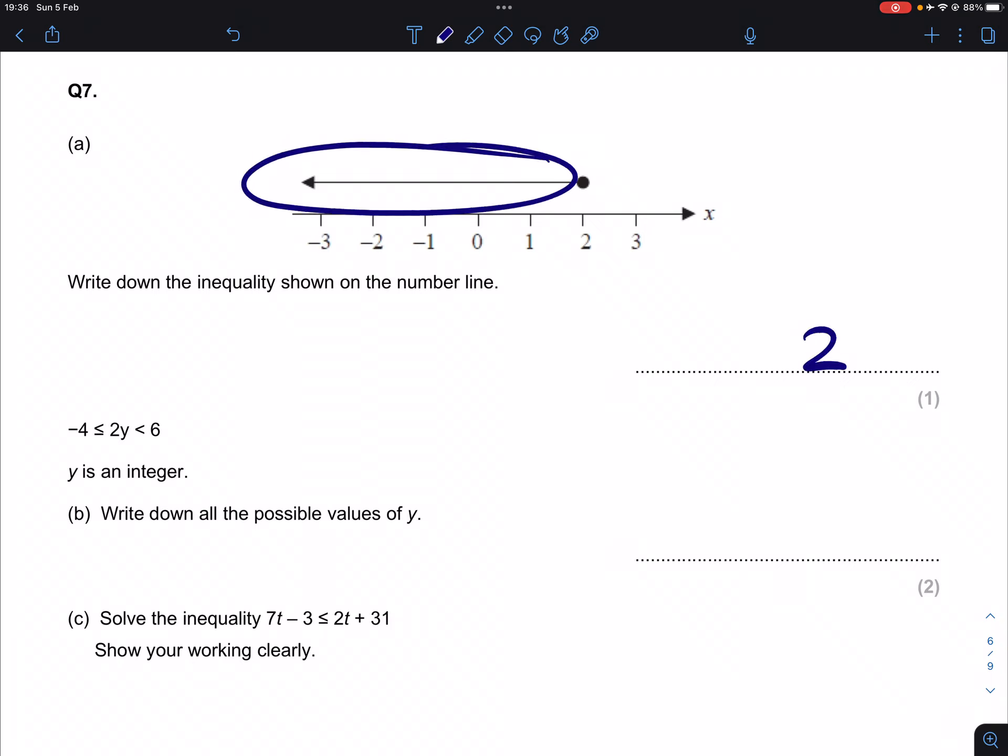Everything that is smaller than 2 is included here, so x, our values based on the number line, x is going to be less than or equal to 2. Part b: minus 4 is less than or equal to 2y is less than 6.